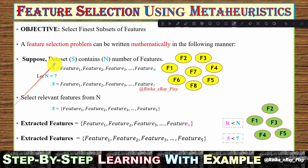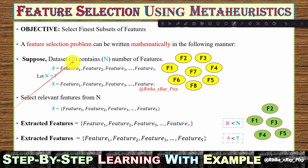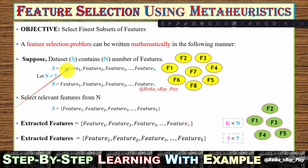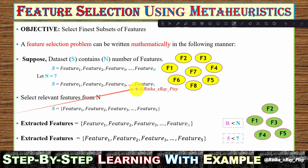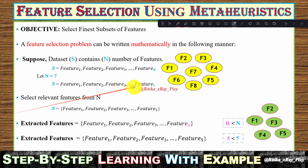Our objective is to select the finest subsets of features from a feature dataset. Mathematically, suppose we have a dataset S containing N number of features. For example, suppose we have a total of seven features in this dataset, so N equals seven. The features are numbered one through seven, as you can see here.